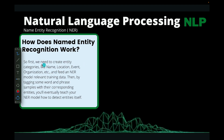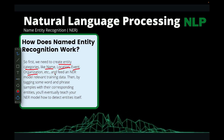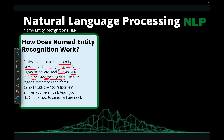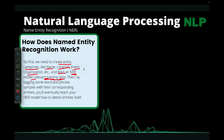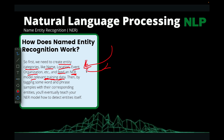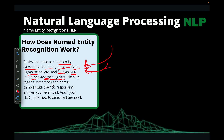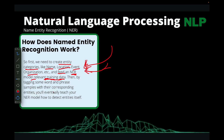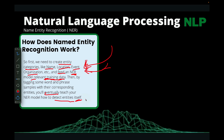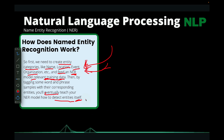First, we need to create entity categories such as name, location, event, organization, and so on. Then we feed the named entity model with relevant training data so it understands what it is supposed to learn. If it's English, you feed it English named entity data; if it's French, you feed it French data, so it learns the structure and patterns. By tagging word and phrase samples with their corresponding entities, the model will gradually detect entities on its own. It's essentially a supervised machine learning model.